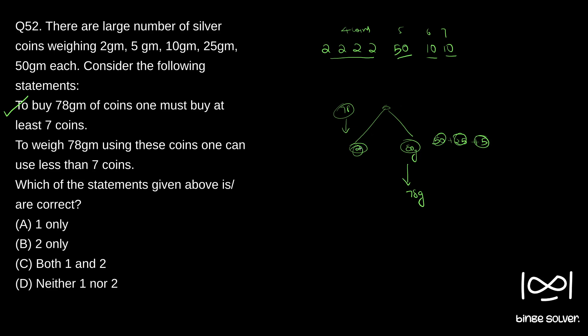So we can find out whether it is 78 gram. Only placing 78 grams will balance this out. So using such a scale, just with four coins we can set up a scale to weigh 78 grams. So I think that is what they mean by this statement: to weigh 78 gram using this coin one can use less than seven coins.